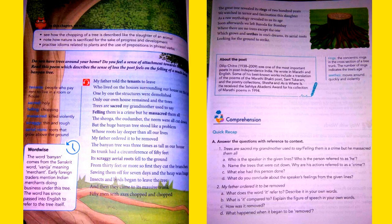But the huge banyan tree stood like a problem whose roots lay deeper than all our lives. My father ordered it to be removed. The banyan tree was three times as tall as our house, its trunk had a circumference of 50 feet, its craggy aerial roots fell to the ground from 30 feet or more.